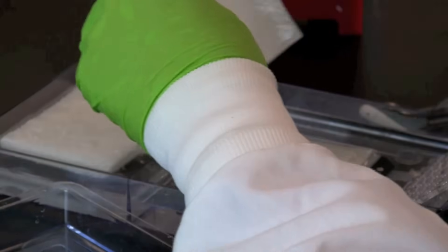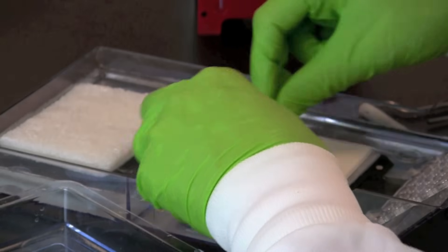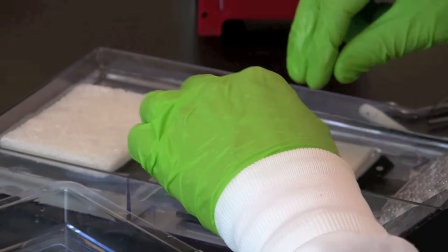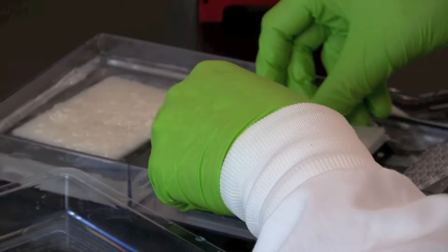Place a second sheet of wet blotting paper on top of the nitrocellulose membrane. Place a second wet fiber pad on top of the blotting paper.